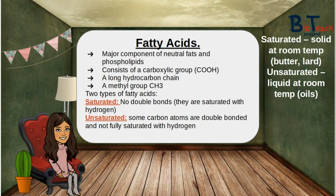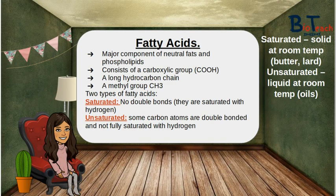Fatty acids are a major component of neutral fats and phospholipids. Most fatty acids consist of an even number of carbon atoms with hydrogen bound along the length of the chain. There is a carboxyl group, or COOH, at one end that makes them acidic. They are generally classified as saturated or unsaturated. Saturated means there are no double bonds in the chain — each carbon is saturated with hydrogen. Unsaturated means some carbon atoms are double bonded and not fully saturated with hydrogen. You might hear of mono-unsaturated, meaning one double bond, or poly-unsaturated, meaning multiple double bonds. An easy way to tell whether a fat is saturated is to check its state at room temperature — anything solid at room temperature, like butter and lard, is saturated, while unsaturated fats like oils are liquid at room temperature.